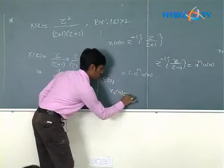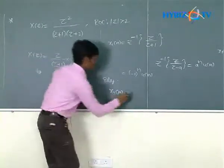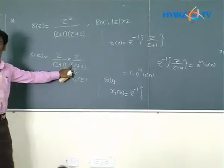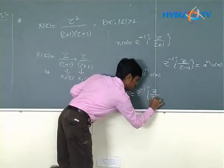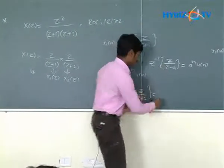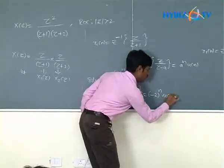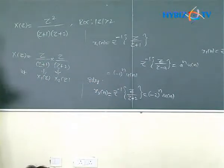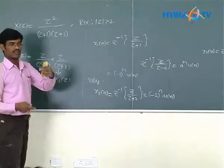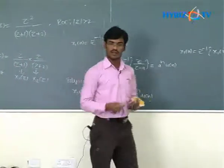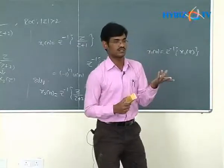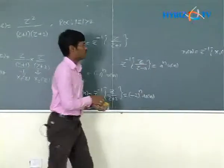Similarly, X2(n) equals Z⁻¹ of X2(Z), which is Z⁻¹ of Z/(Z+2). Comparing with the standard form Z/(Z−a), we get a = −2. Therefore X2(n) = (−2)ⁿ·u(n). Now we have both discrete time sequences. By the convolution property, the inverse Z transform of X1(Z)·X2(Z) equals X1(n) convolved with X2(n).